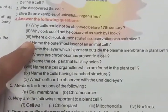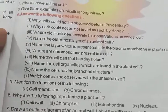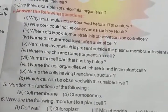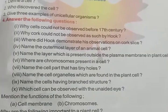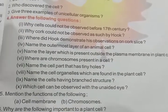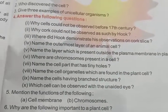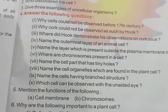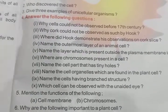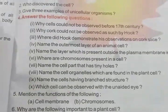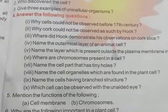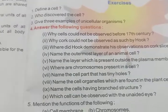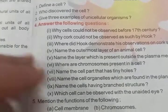Why could cells not be observed before the 17th century? Because their size is very, very small. And probably because the microscopes were not there or not available, people never thought of looking at a cell and were not aware of it. Questions that are not in your textbook — I'll send you notes for those.